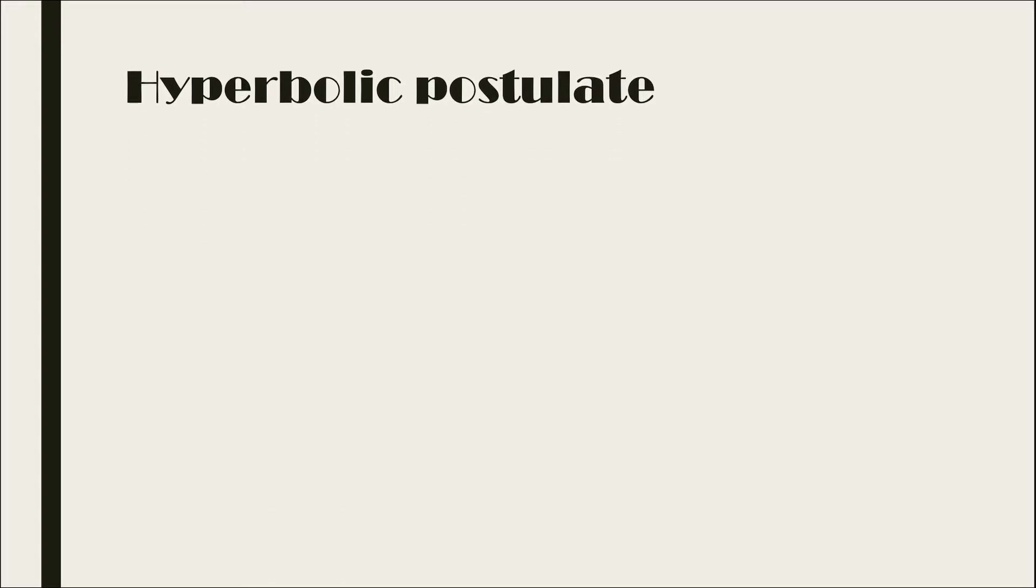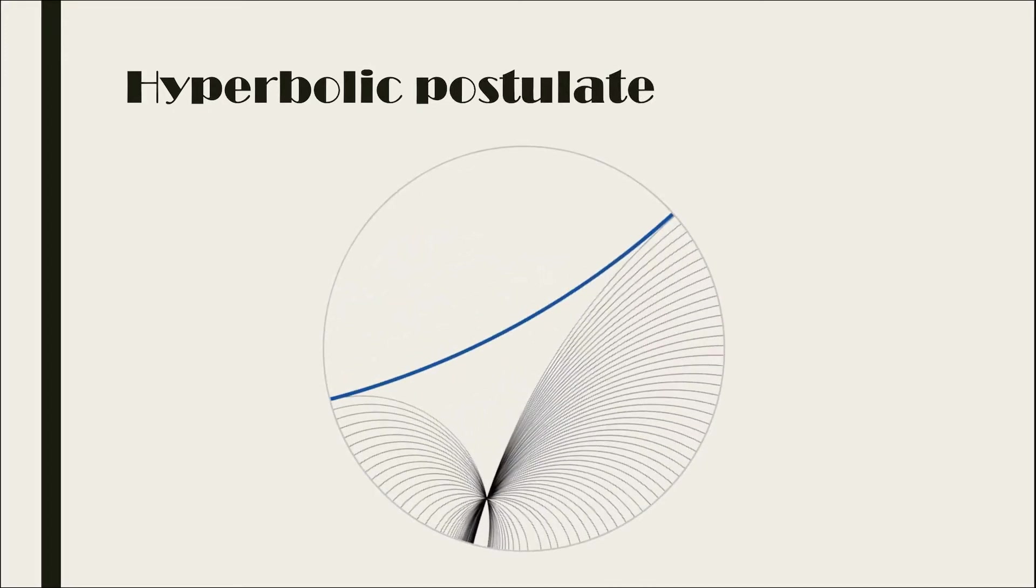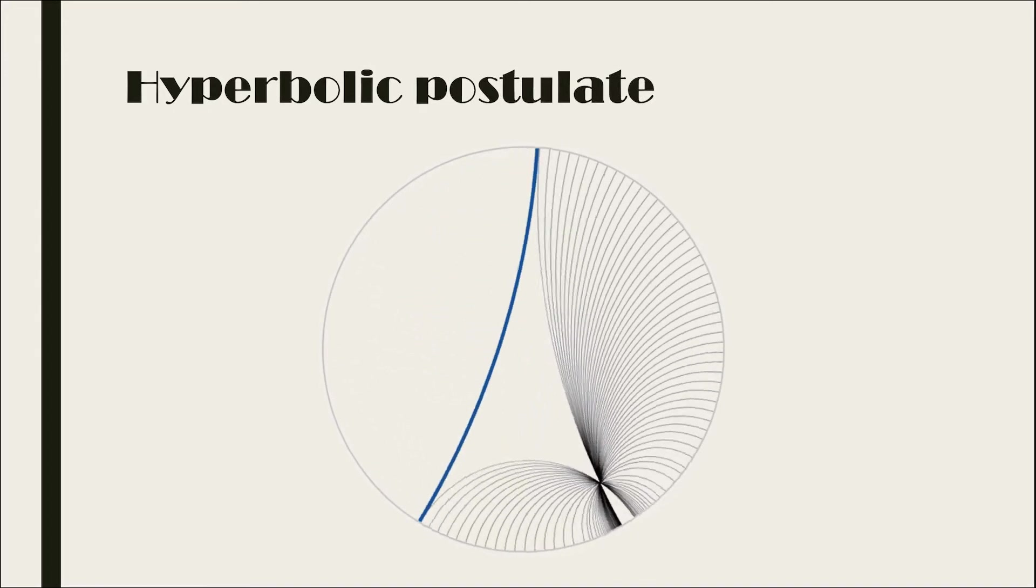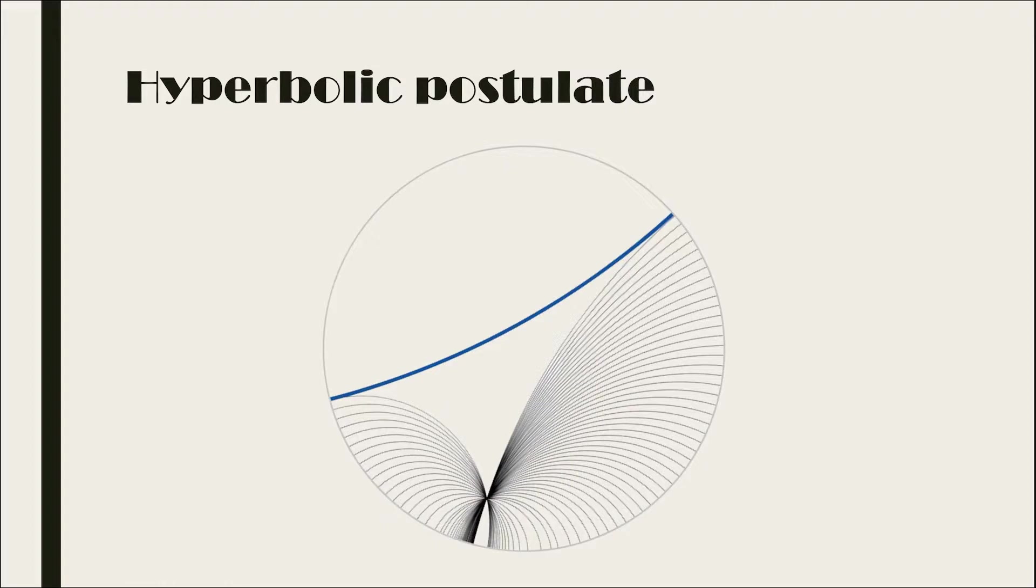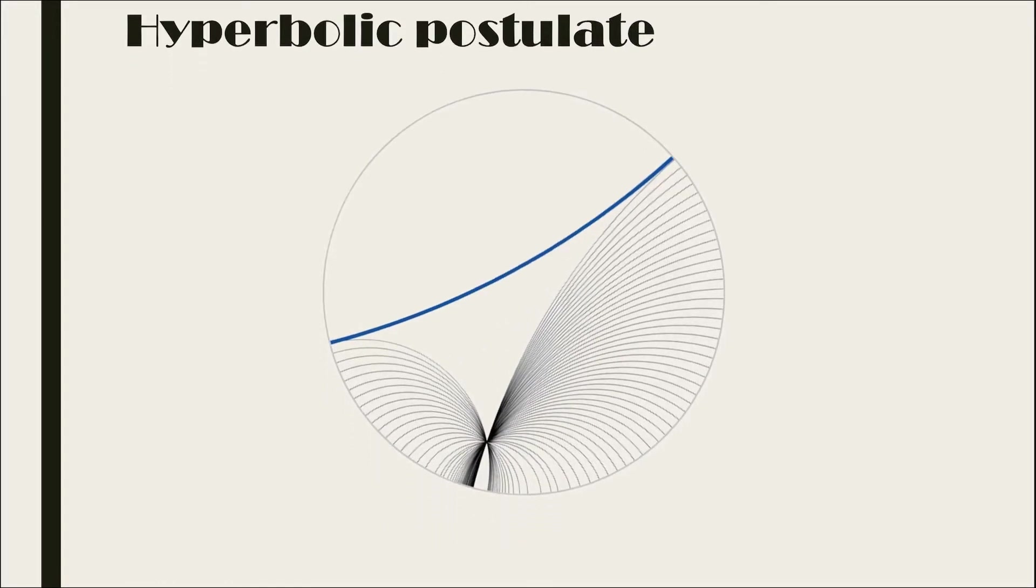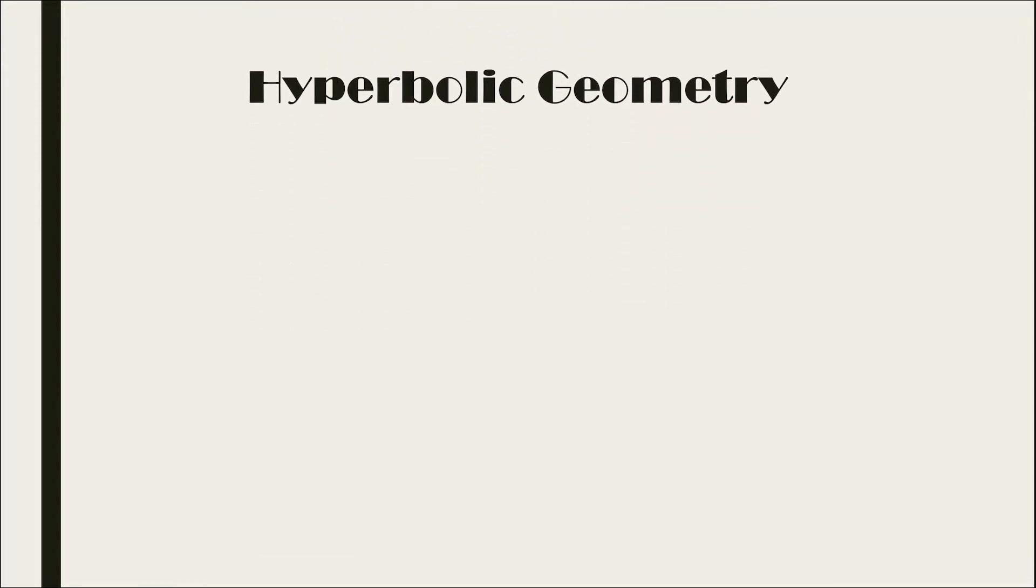For any infinite straight line L and any point P not on it, there are many other infinitely extending straight lines that pass through P and which do not intersect L, a new and foreign concept from what we're usually used to in Euclidean geometry.